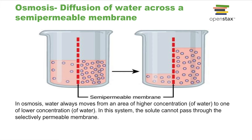Here's an example. You have two different solutions that are separated by a semipermeable membrane, which is similar to our plasma membrane. In this situation, the only thing that can pass through the membrane and move down its concentration gradient is water.